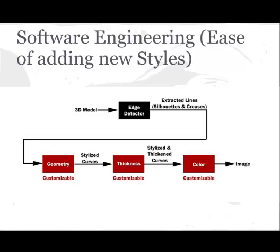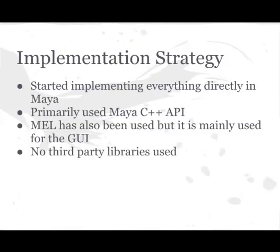The user can write new classes, inheriting the base classes, and implement their own specialized geometry modifier, or thickness and color generator. We started implementing everything directly in Maya. We used Maya C++ API primarily, and we used MEL for creating the GUI. No third-party libraries are used.